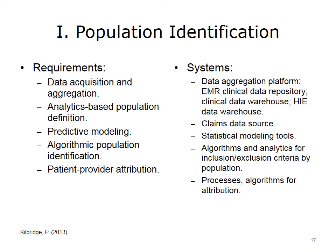The kinds of systems used to support population identification are primarily data aggregation platforms — EMR clinical data repositories, clinical data warehouses, and health information exchange data warehouses. In Maryland, there is the Chesapeake Regional Information System for Patients, an HIE populated primarily with inpatient and acute data from hospitals. That data needs to be accessible by case managers so they can see the full scope of services provided to patients. Claims data is also important for identifying the population. Statistical modeling tools, algorithms, and analytics for inclusion and exclusion criteria by population are necessary, as are processes for attribution.